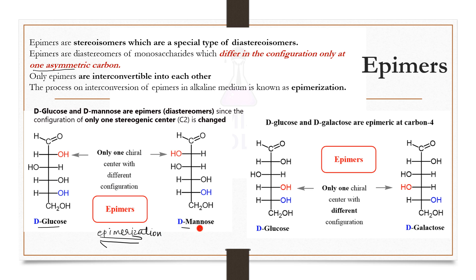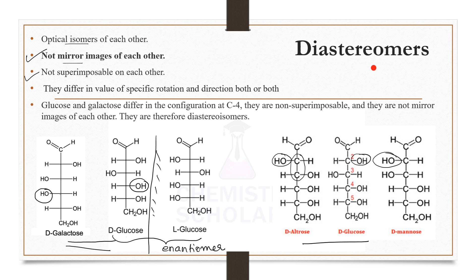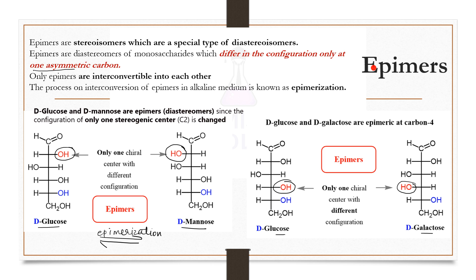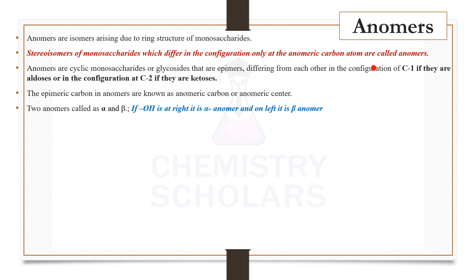D-glucose and D-mannose are epimers of each other because they differ at only one carbon atom and the rest of the structure is exactly the same. Similarly, D-glucose and D-galactose differ only at the fourth carbon atom and are epimers of each other. When talking about epimers, the difference is in only one carbon atom; in diastereomers, the difference could be in one or more carbon atoms. Hence epimers are special types of diastereomers, and they are interconvertible.